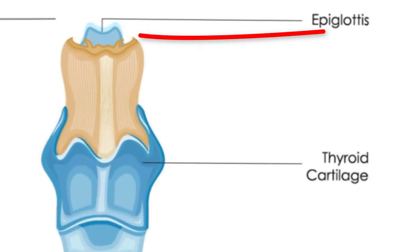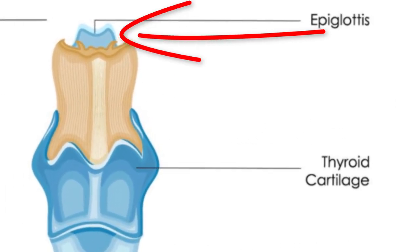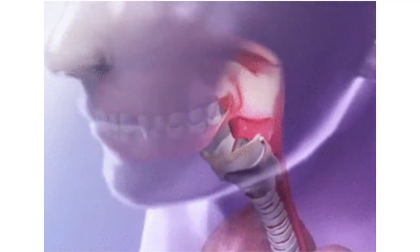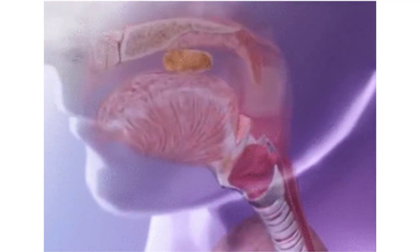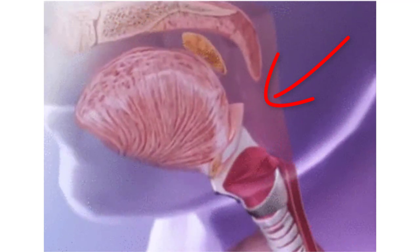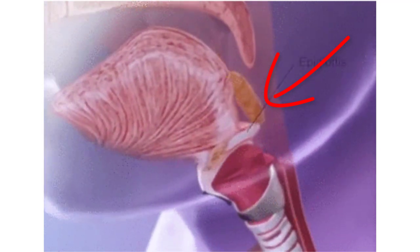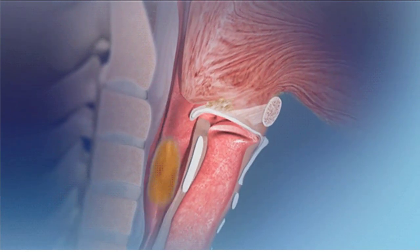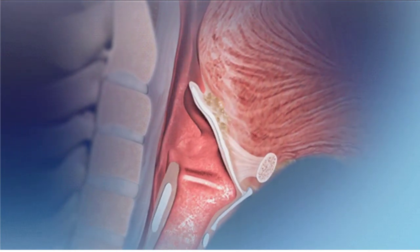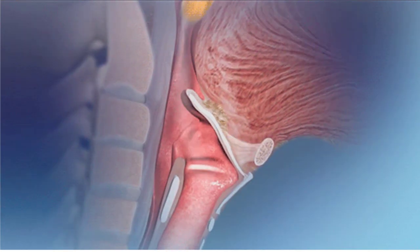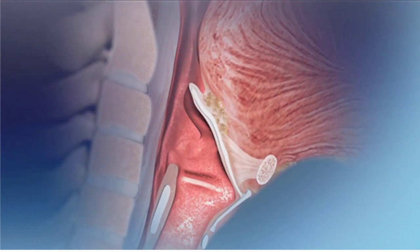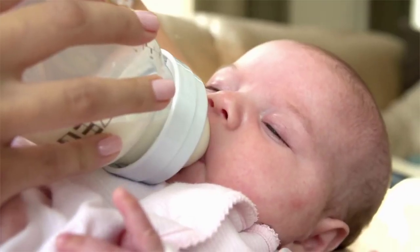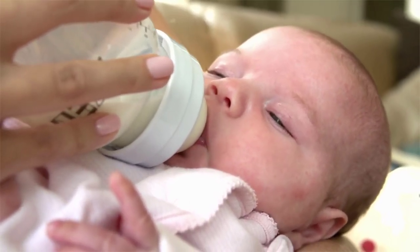The superior opening of the larynx is guarded by a flap of tissue called the epiglottis. At rest, the epiglottis stands almost vertically. During swallowing, however, the epiglottis closes the airway, directing food and drink into the esophagus behind it. In infants, the larynx is relatively high in the throat and the epiglottis touches the soft palate. This creates a more or less continuous airway from the nasal cavity to the larynx, allowing an infant to breathe continually while swallowing.